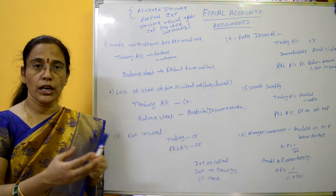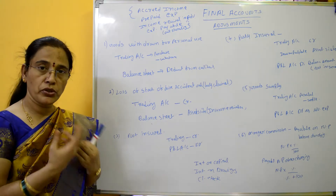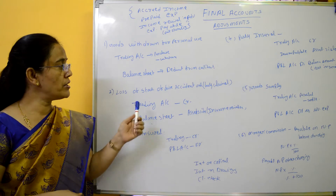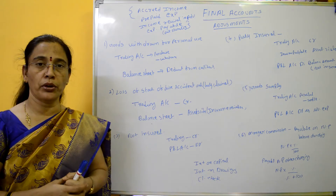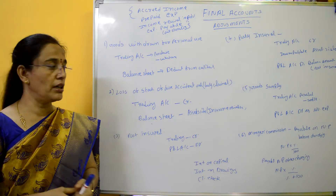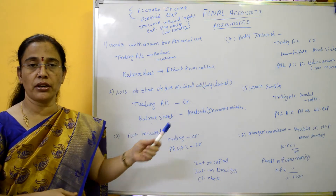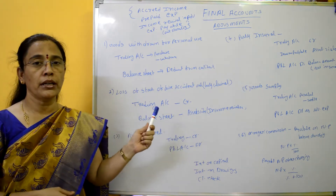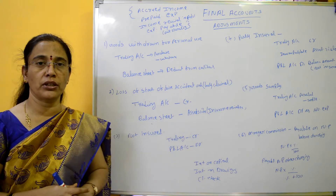If there is a loss of stock, for example by fire accident, for an amount of 10,000, we credit that amount of 10,000 in the trading account.